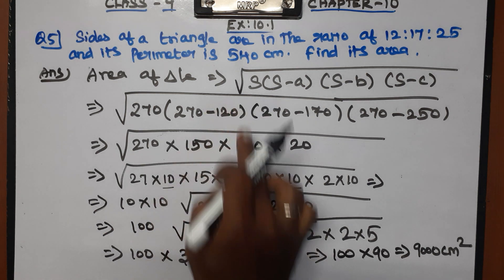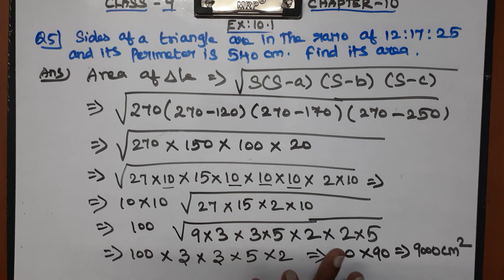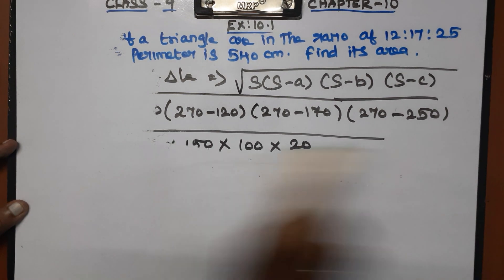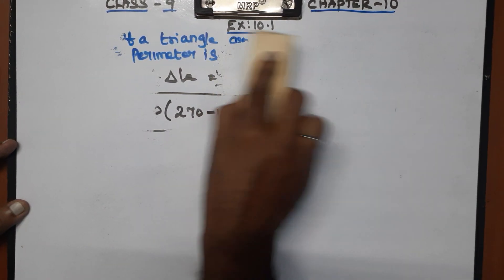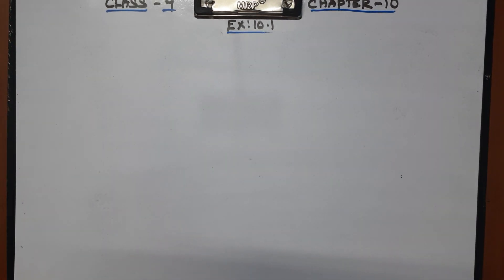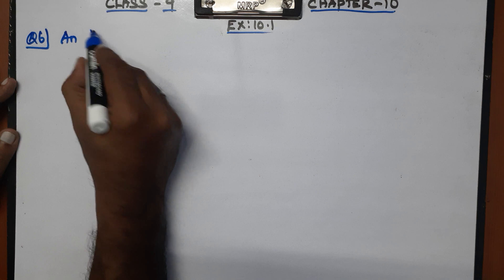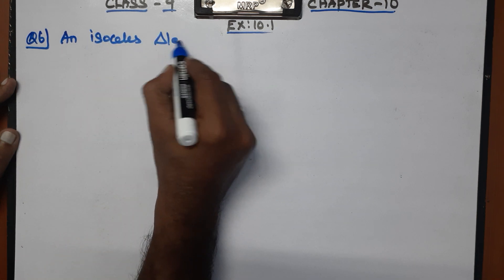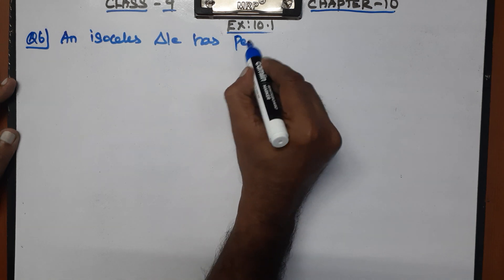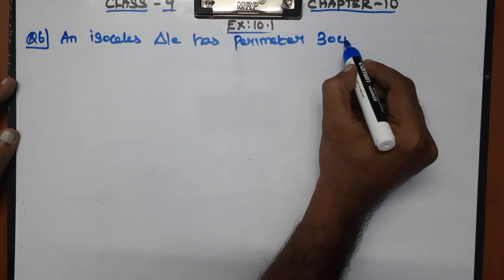If you want to get the square root simplification correctly, you can get full marks — 5 marks. Now let's move on to Question Number 6.